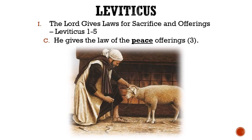Letter C: He gives the law of the peace offerings. For this offering, one could bring a male or female lamb or goat without blemish. The individual offering the sacrifice would lay his hands upon the head of the animal, kill it at the door of the tabernacle, and then the priest would burn the innards and sprinkle the blood upon the altar all around it.